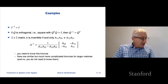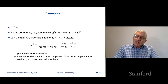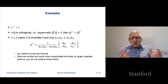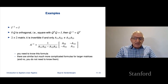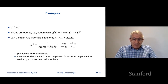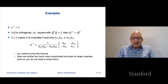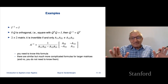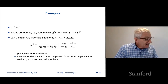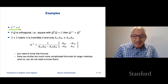Let's look at some examples of matrix inverses. The inverse of the identity is the identity — we can check: I times I equals I, and the columns of I are the standard basis, which are linearly independent.